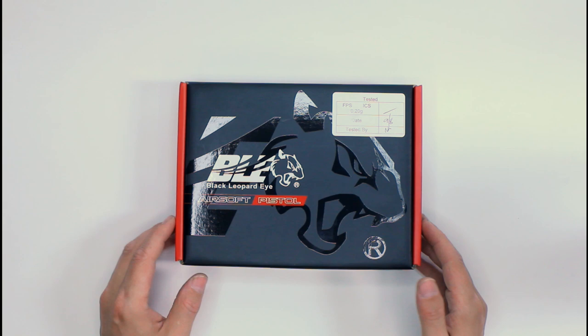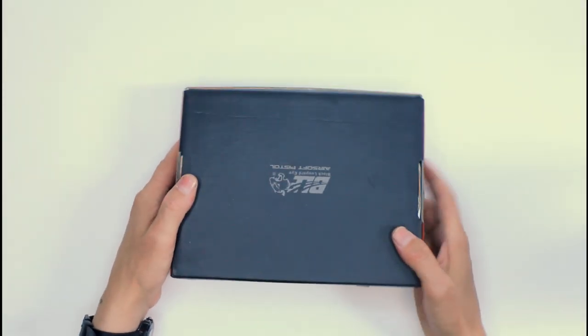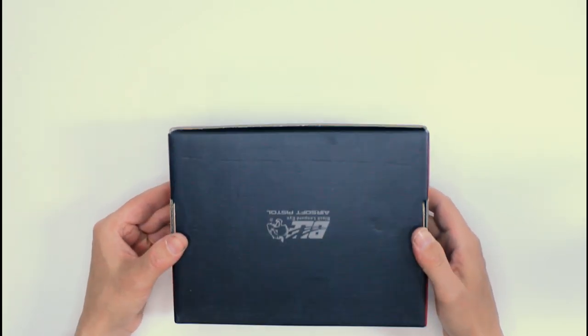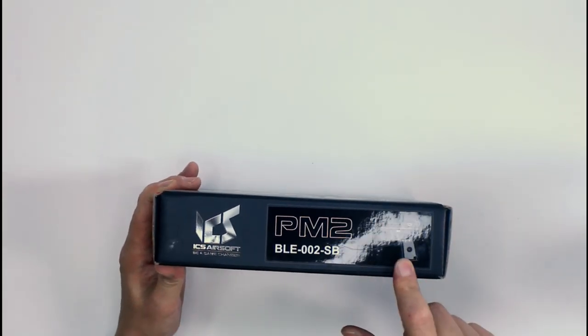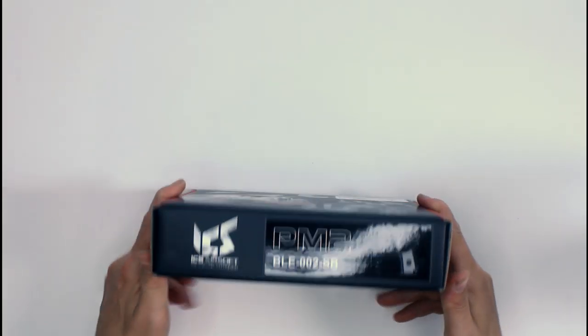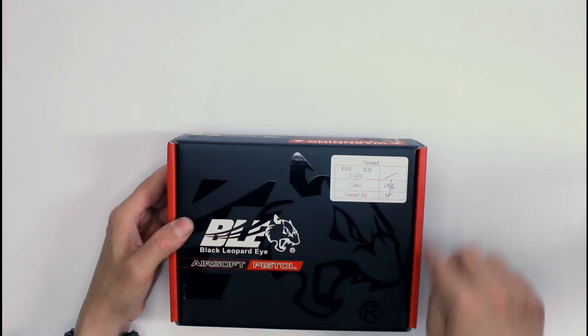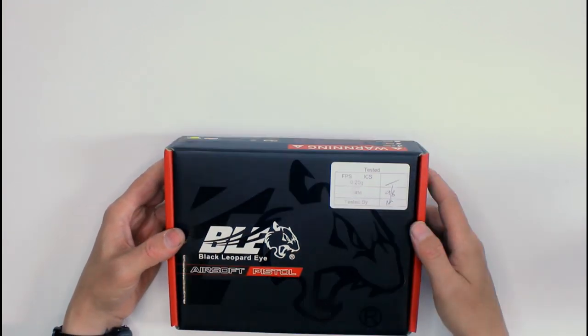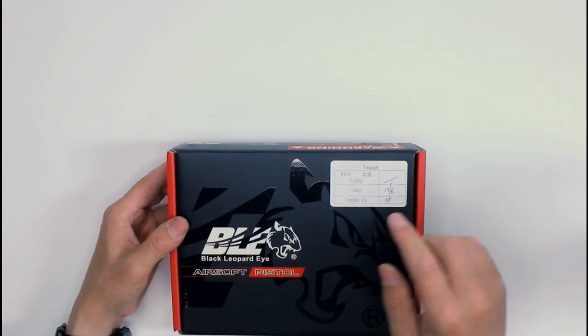So the box, as you can see, is the standard ICS BLE box with a black leopard eye logo on the bottom. ICS Airsoft PM2 and the model number just here, and then a line art of the actual pistol on top. Again, logos for the red borders and this sort of, I'm gonna say embossed but it's not embossed, shiny logo.